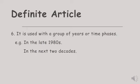Definite article is also used with a group of years or time phases. Artikel the digunakan untuk menunjukkan kumpulan tahun ataupun fase waktu. For example: 'in the late 1980s' — di akhir tahun 1980-an; 'in the next two decades' — di dua dekade setelahnya.